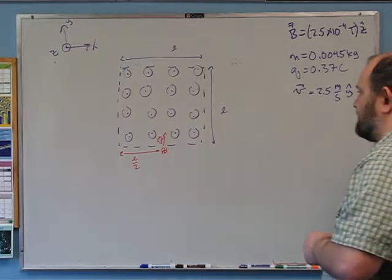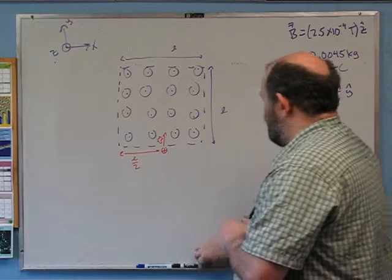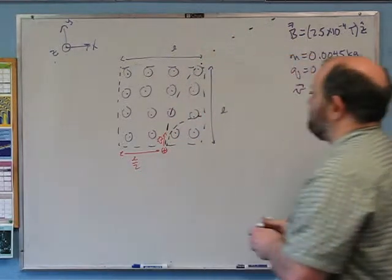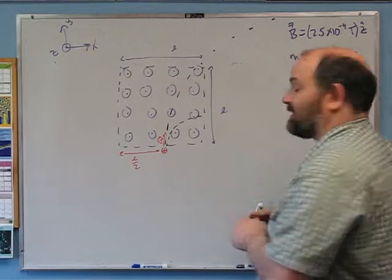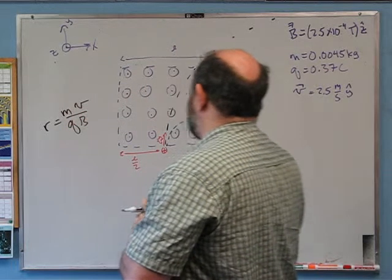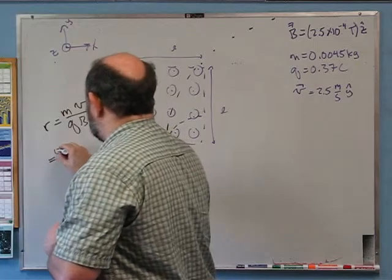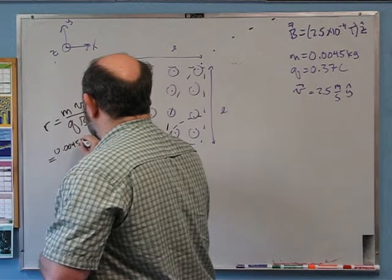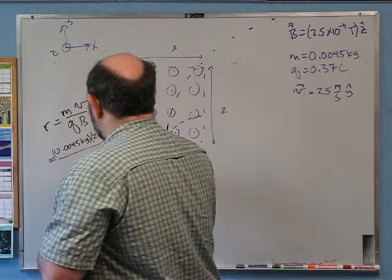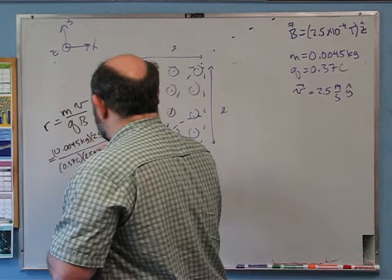Qualitatively: the force is q(v × B), which initially pushes the particle in a curved path. To find where it exits we need the radius. Using r = mv/(qB) from the previous problem: r = (0.0045 kg × 2.5 m/s) / (0.37 C × 2.5×10⁻⁴ T). The units work out: kg·m/s divided by C·(N·s/(C·m)) simplifies to meters.